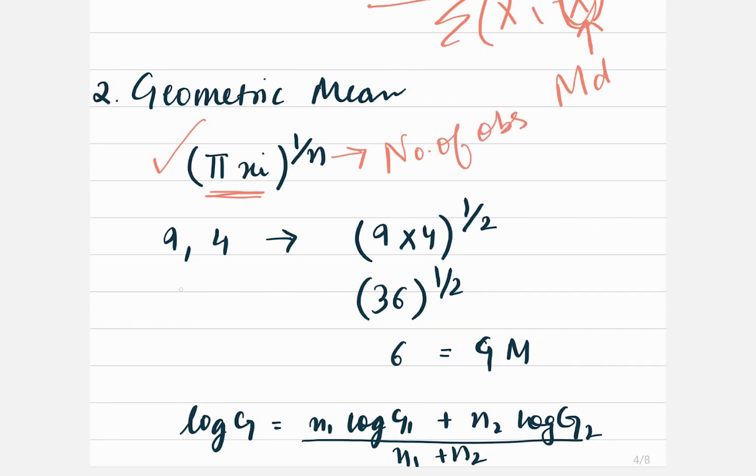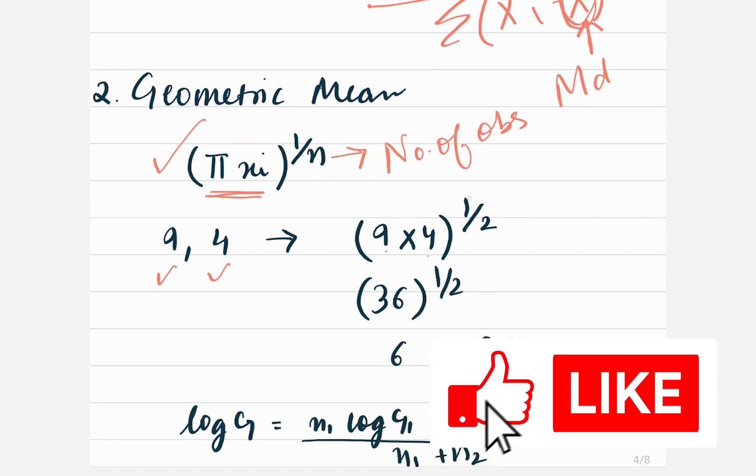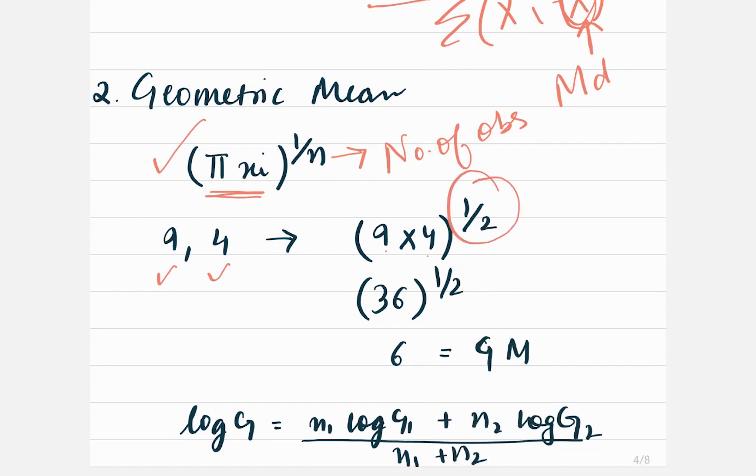Let's take a small example where we have just two data points, 9 and 4. So to calculate the geometric mean I simply multiply 9 and 4. Since the number of observations is just 2, I do 1 by 2 in the power and the geometric mean comes out to be 6 in this case.